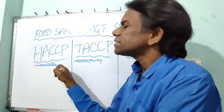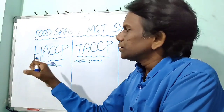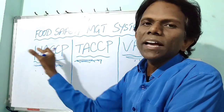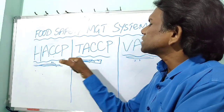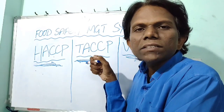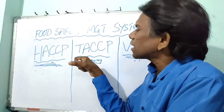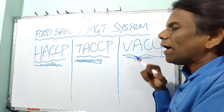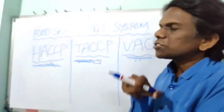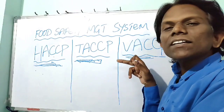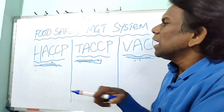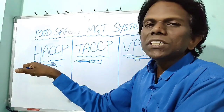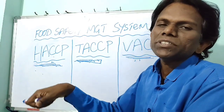HACCP is a science-based approach covering physical, chemical, and biological hazards. TACCP is motivation-based — behaviorally or ideologically — to harm the public. Whereas VACCP is also motivational but based on economic gain. HACCP, TACCP, and VACCP are all approved by GFSI, the Global Food Safety Initiative Standards.